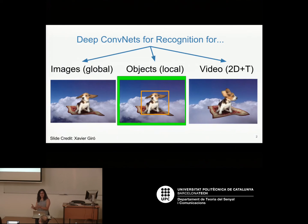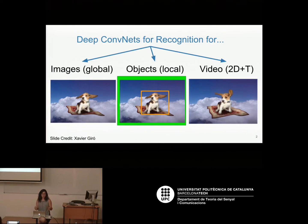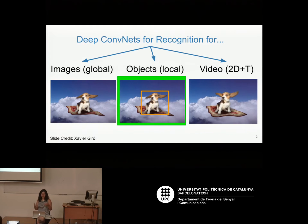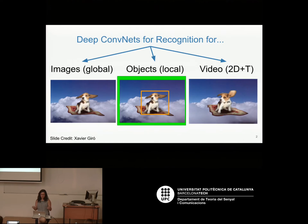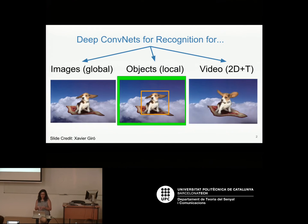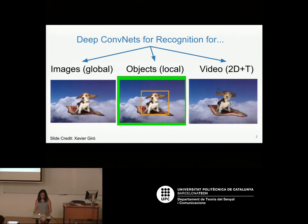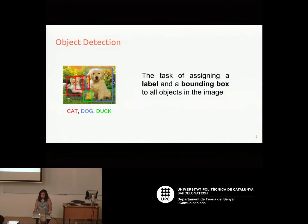So far, apart from saliency, we've only seen deep nets do classification — they see images globally and make a prediction for the entire image. But this lecture is about analyzing images locally and describing what's in the image locally. This is what object detection is: the task of assigning a label and a bounding box to all objects in an image.